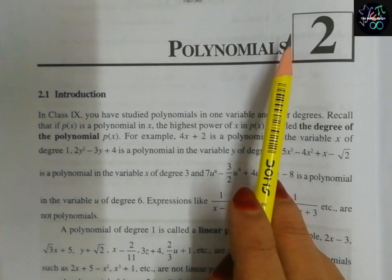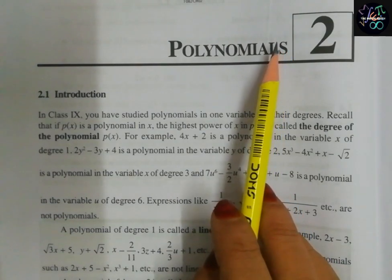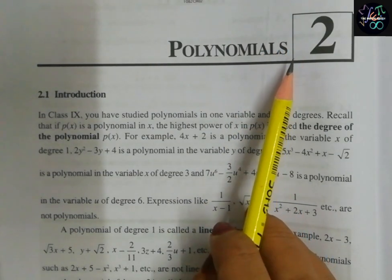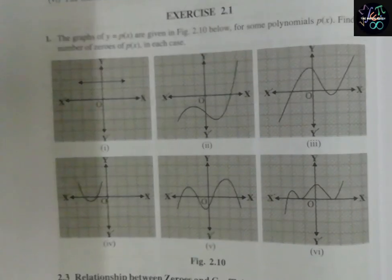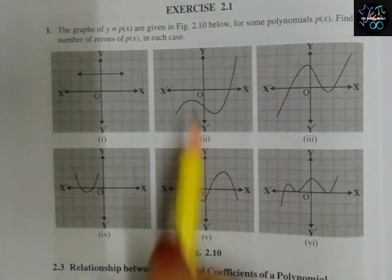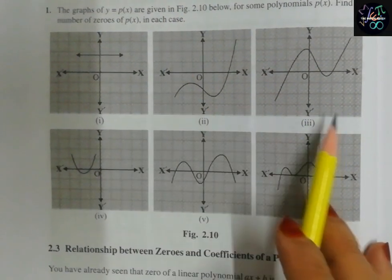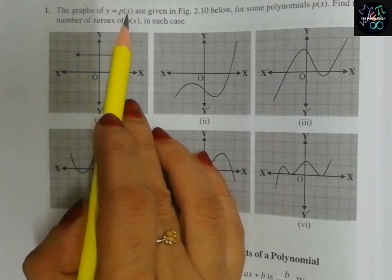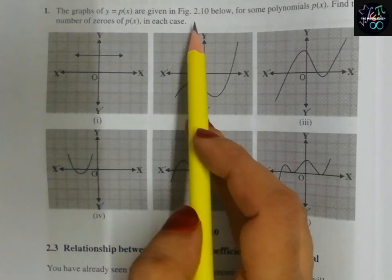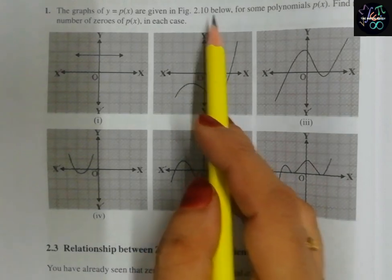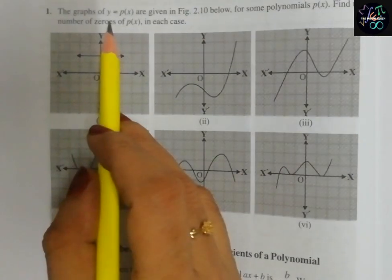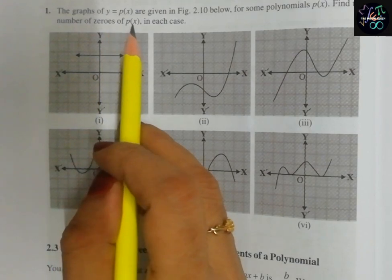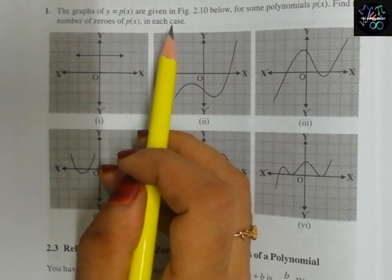From the new NCERT textbook, in this video we are going to discuss the first exercise of this chapter. Let us see what is there in exercise 2.1. The graph of y equals p of x is given in figure 2.10 for some polynomial p of x. We have to find the number of zeros of p of x in each case.